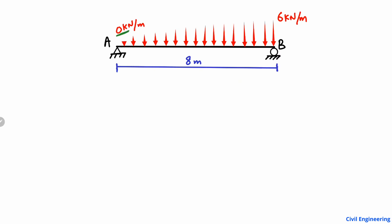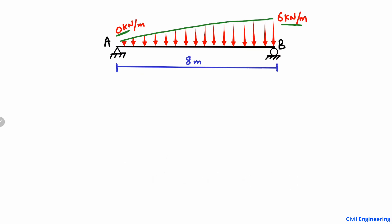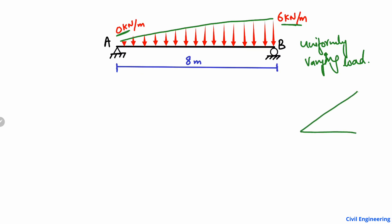The load increases from one end of the beam from zero kilonewton to six kilonewton per meter. There is a uniformly varying load acting on this beam. When the load is varying along the length of the beam, such type of load is known as the uniformly varying load.